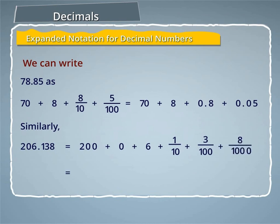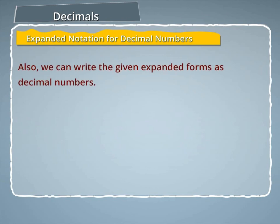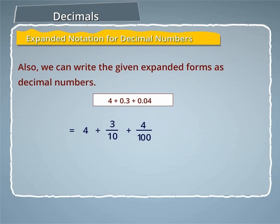That is equal to 200 plus 6 plus 0.1 plus 0.03 plus 0.008. Also, we can write the given expanded forms as decimal numbers: 4 plus 3 by 10 plus 4 by 100 is equal to 4.34.